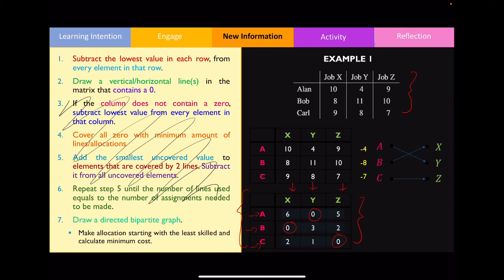To find the minimum cost overall, we refer back to the original dataset. Alan takes four hours to complete job Y, eight hours for Bob to complete job X, and Carl takes seven hours to complete job Z. Adding these values gives a minimum time of 19 hours — this is the most optimised way to assign these three tasks to these three workers.